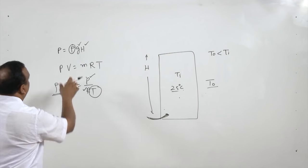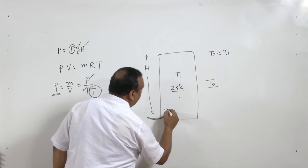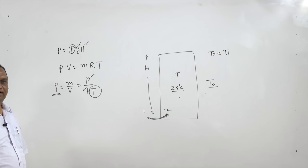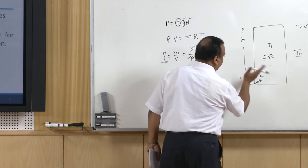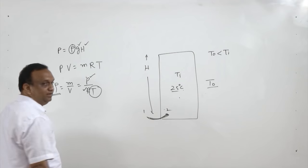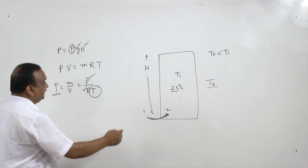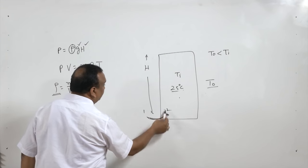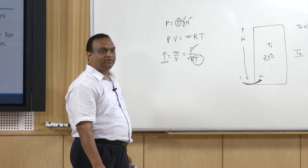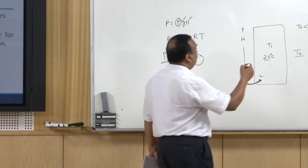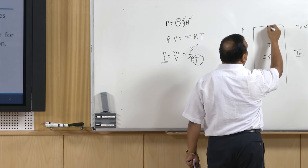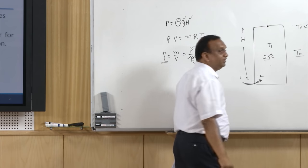Moving upward, the reduction in pressure outside is greater than the reduction inside because outside air density is larger. When the hot gases reach the top of the chimney, the pressure at that point is larger than the surroundings, which drives the flow.